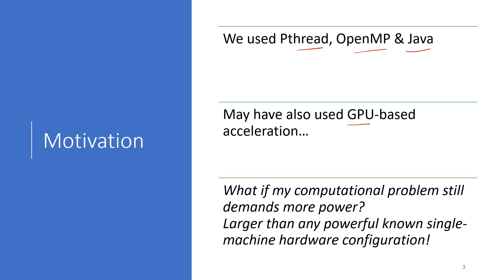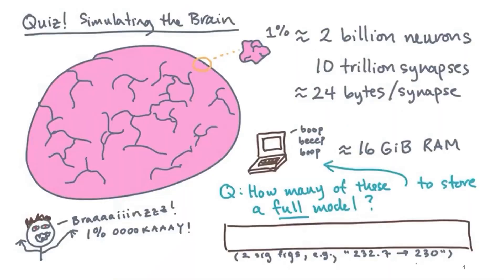But what if the computational problem you have demands more power — really much more power — larger than any powerful known single-machine hardware configuration? For example, what if you want to simulate how the brain functions? Simplifying to the maximum, 100% of the brain contains approximately 2 billion neurons and 10 trillion synapses. If you can represent each synapse with 24 bytes, you would need a 16 GB RAM PC to run your simulation for only 1% of the brain.